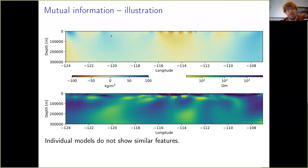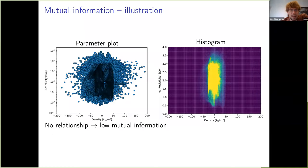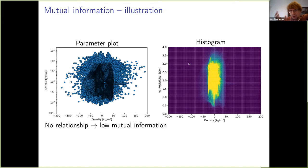To calculate this variation of information, what we do is plot the density anomaly and the resistivity in each of those cells against each other in the horizontal plane — in the parameter space of resistivity versus density. That's what you see here on the left-hand side. What you can see is this cloud of points with no discernible relationship. To calculate the variation of information constraint, we turn that into a histogram, which focuses those features and allows us to turn this parameter plot into probability densities.